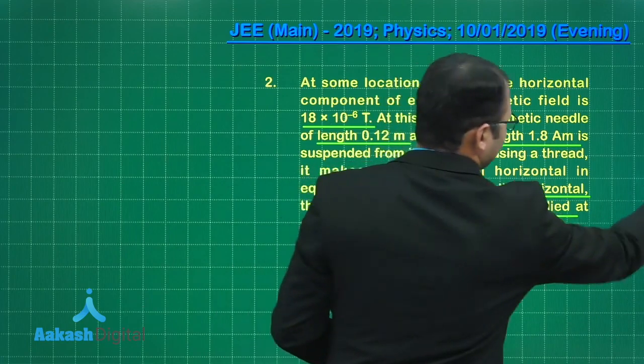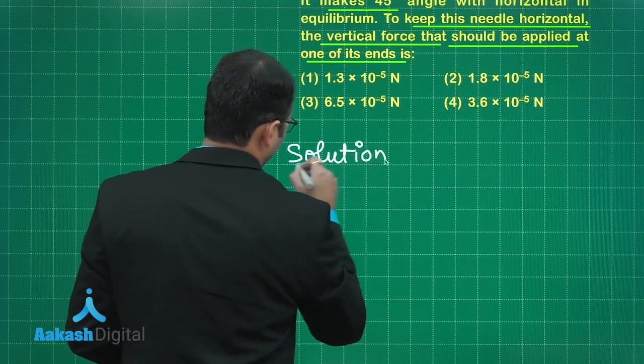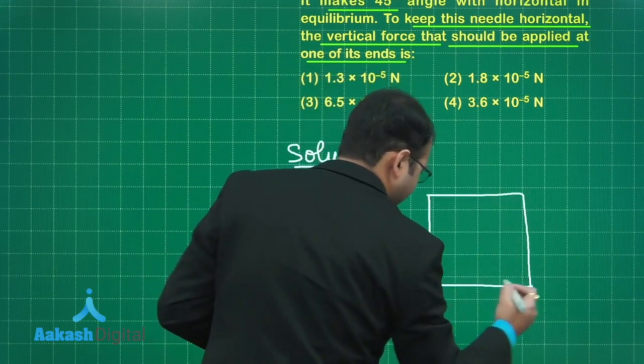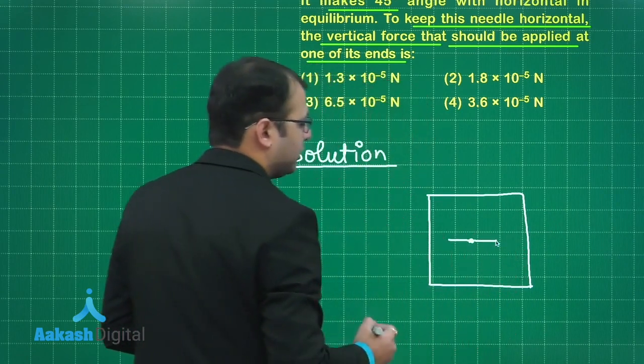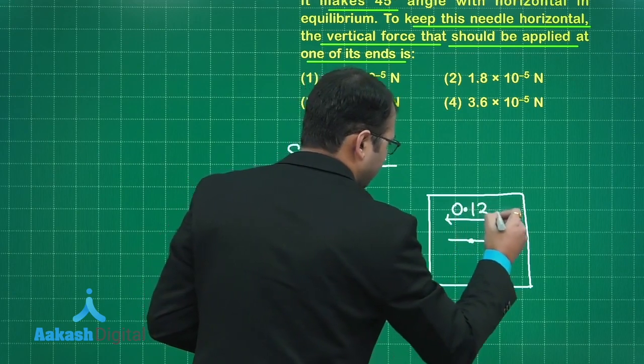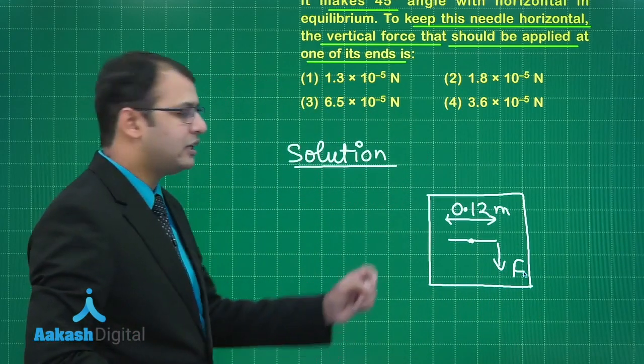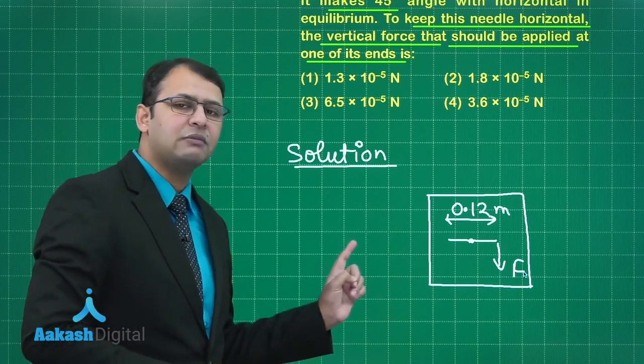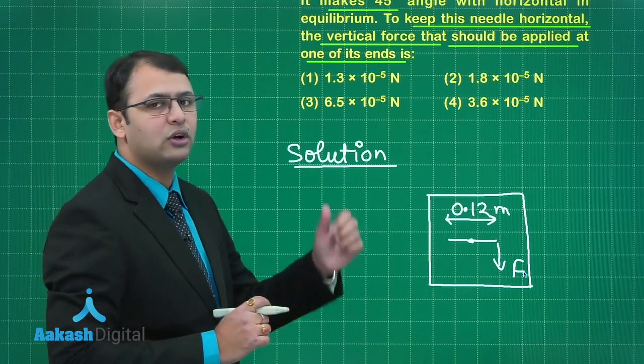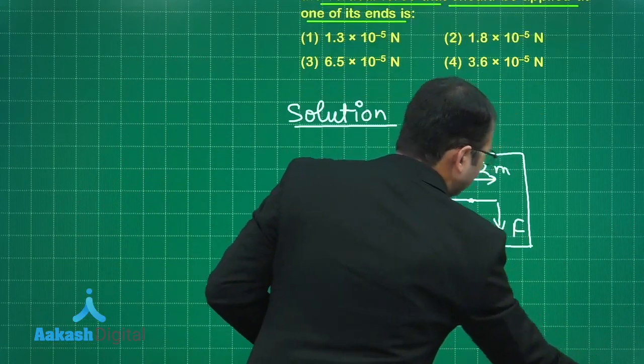So let's have the diagram of this first. There was a vertical plane in which this magnetic needle is there and the total length would be 0.12 meters. For this magnetic needle, I want to apply a force F such that it opposes the torque which is being applied by the vertical component of magnetic field. The torque by this force should be equal in magnitude to that of torque by the magnetic field. So let's first find the torque due to the vertical component of magnetic field.